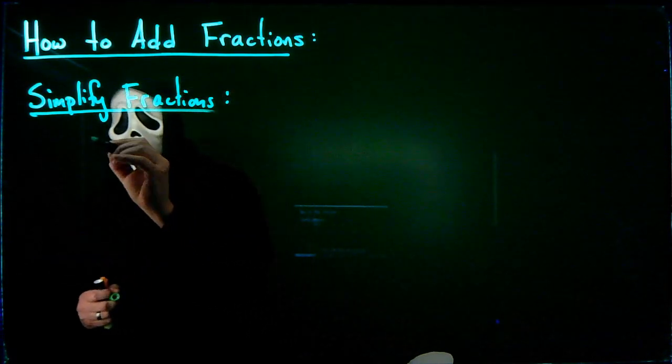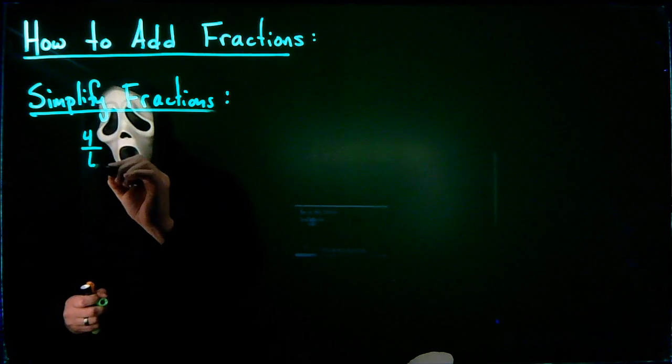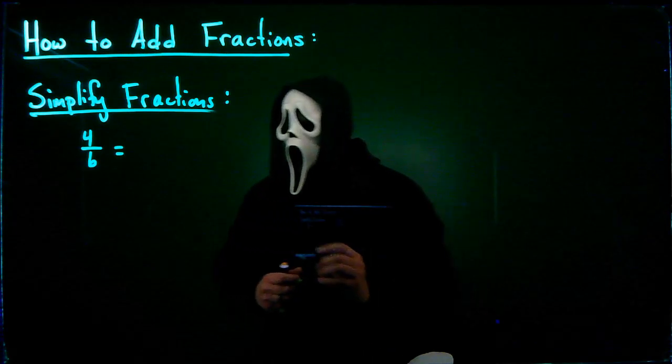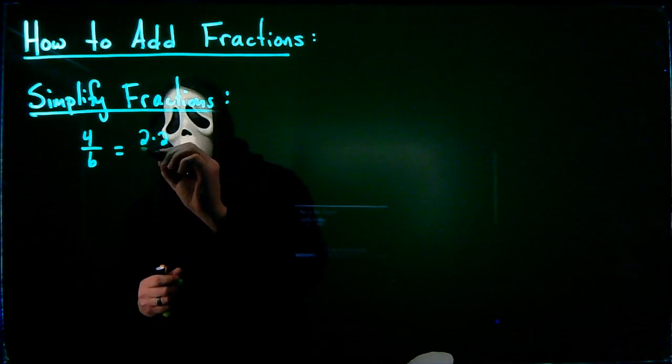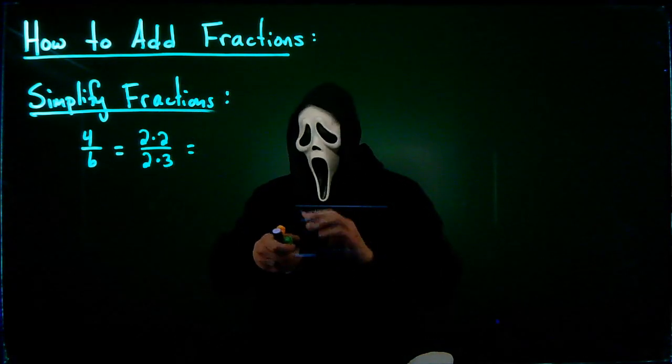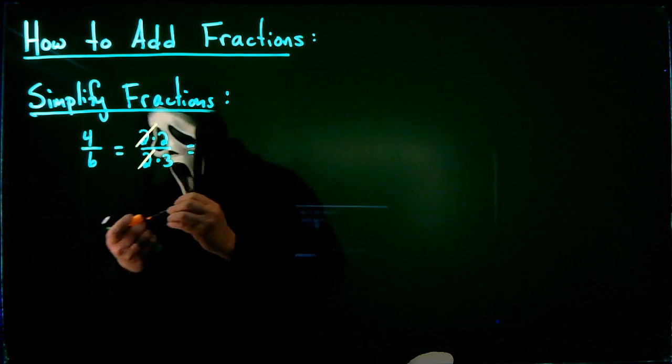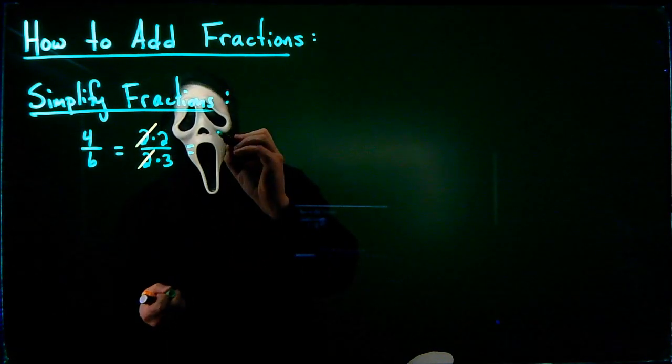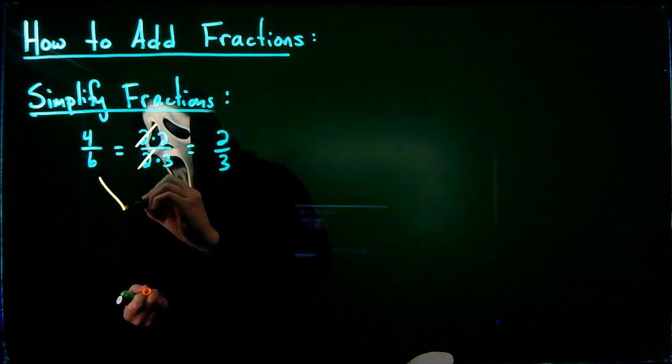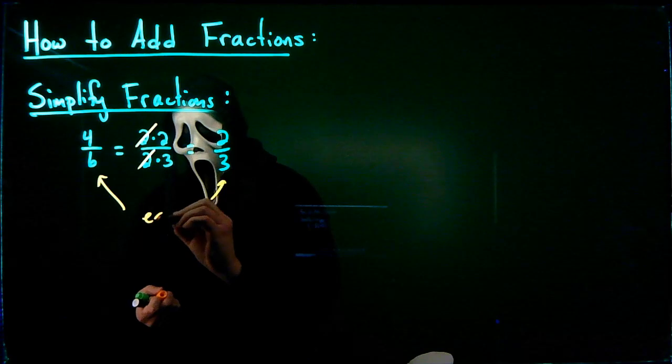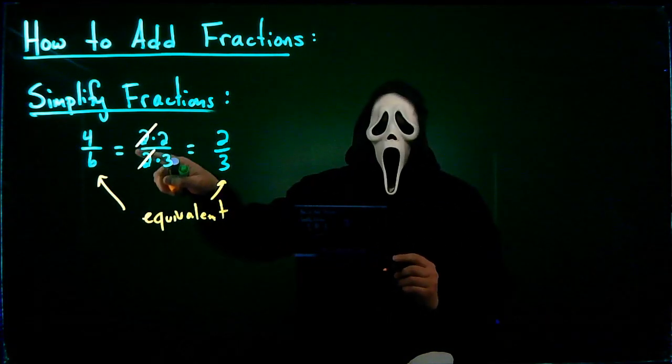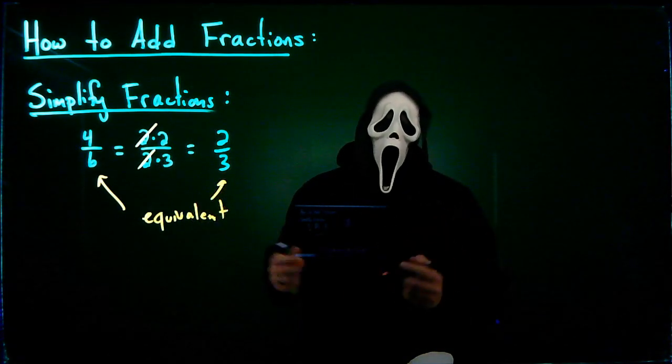For example, if I give you the fraction 4 over 6, notice that both 4 and 6 are composite, meaning I can factor them. So I have 2 times 2 divided by 2 times 3. And we can cancel common factors. So the 2 and the 2 cancel, leaving us with 2 thirds. So we say that these 2 fractions here are equivalent.